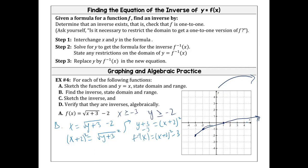The key thing to remember is that when you have an inverse of a function, what was the domain of that function is now the range of the new function, and what was the range is now the domain. So our original domain was x greater than or equal to negative three, and our range was y greater than or equal to negative two.